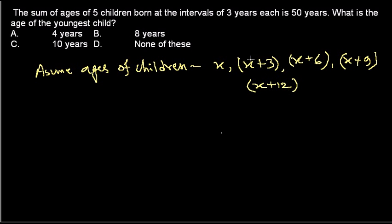It won't create a problem because in all these ages we have only one variable and that is x. If we get the value of x, we will know the age of all children. That's why age problems are pretty easy.